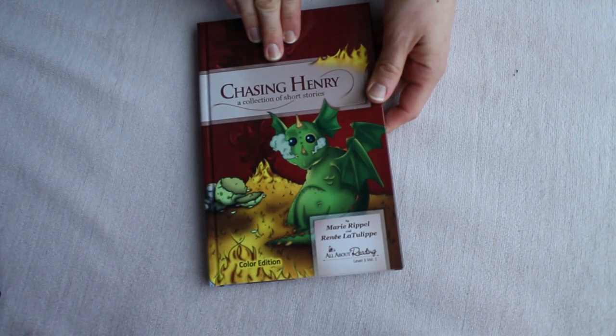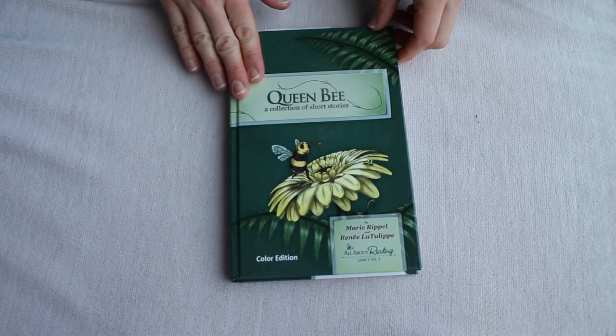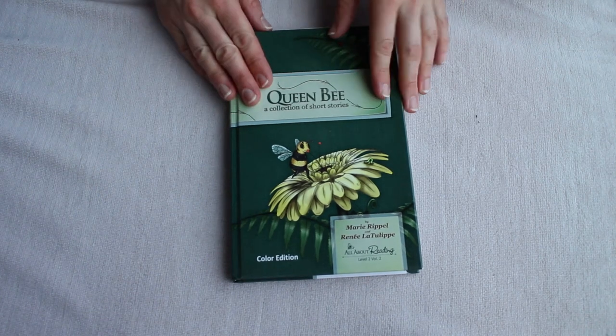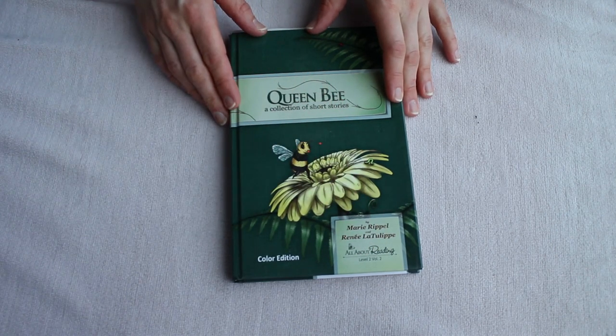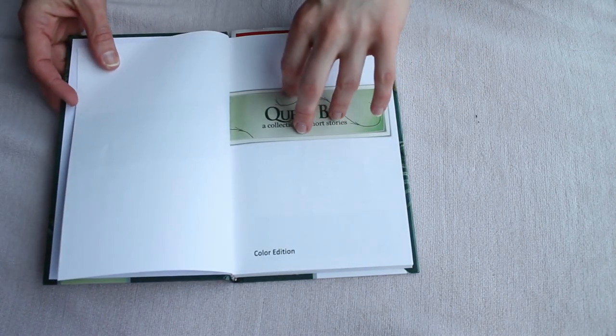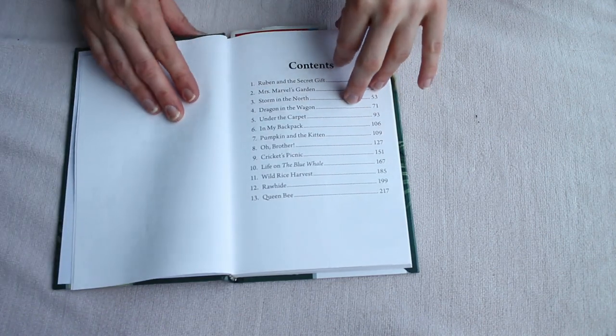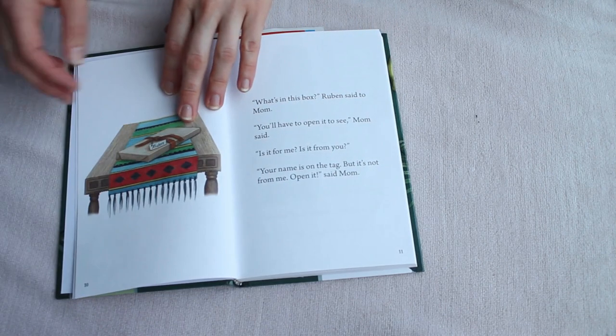Now, let's compare this level three reader to a level two reader and then a level one reader, so that you can see how it progresses. This is the level two reader that my kids are on right now. In level two, there are two readers. You can see level two, volume two on the bottom here. In level one, there are three readers. So the book starts out the same, of course. There are 13 stories in this book, so about the same number of stories.